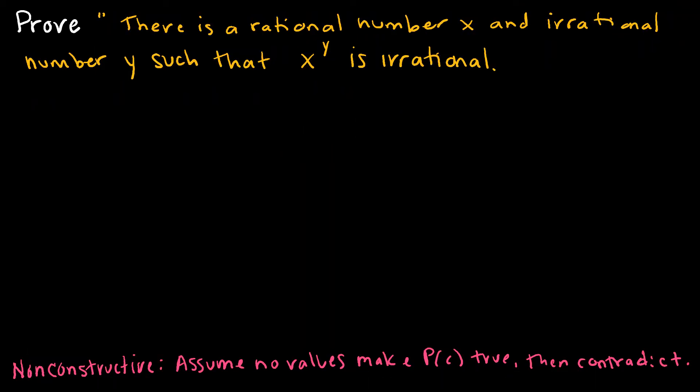Let's take a look at another example. There is a rational number x and irrational number y such that x to the y is irrational. You can also prove this by a non-constructive proof, which is essentially to say assume that there are no values for x and y that would make that statement true, and then we contradict it by saying, look, in fact it is true.